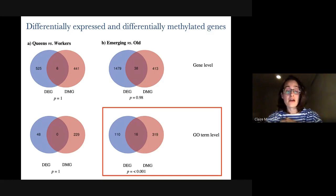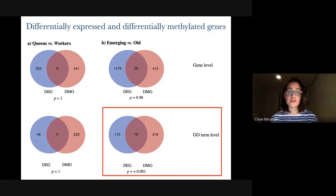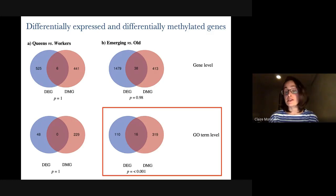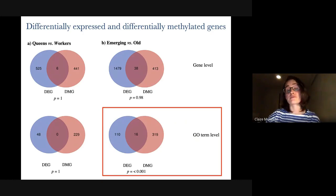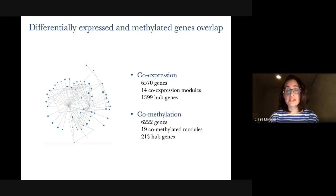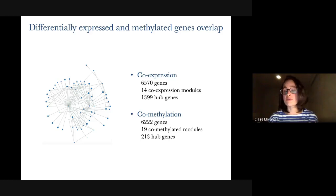We found actually a very weak overlap at the level of GO terms — so rather than at single genes, at the level of biological functions, there was maybe some association between differential expression and differential methylation. But this was not a really great result, and we were thinking it might not have any actual link between the two. So as before, we constructed co-expression and co-methylation networks, and most of our genes could be partitioned into sets of co-expressed or co-methylated modules.